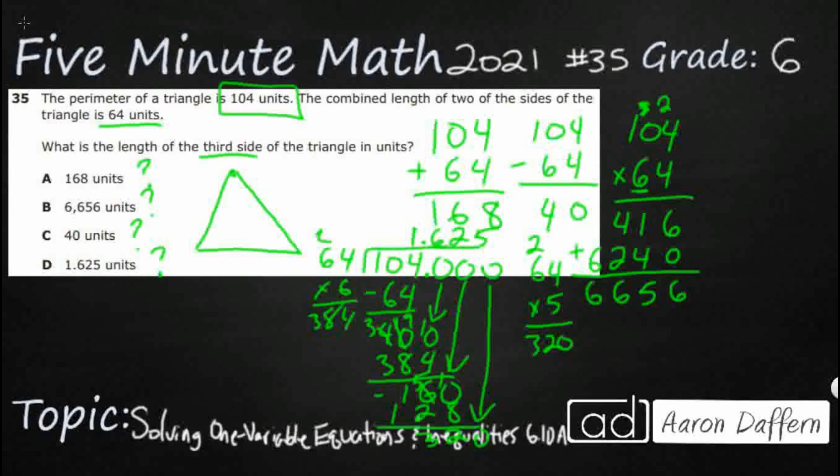The perimeter is 104. So I'm going to say side 1, side 2, and side 3. Side 1 plus side 2 plus side 3 equals 104. The combined length of two sides is 64. They don't tell us which one, so let's say that these two equals 64. So 64 plus that remaining side 3 is going to equal 104. How do we isolate the variable?